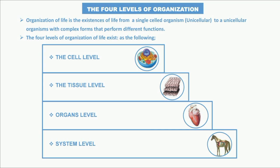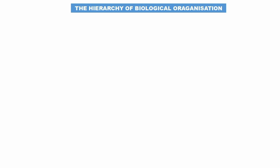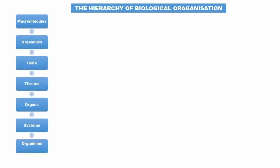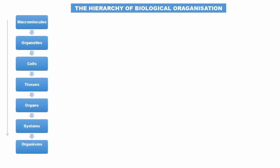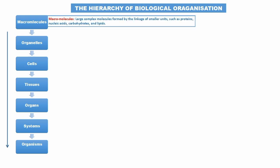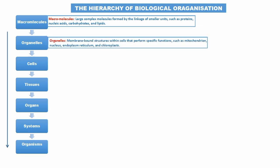Regarding the hierarchy of biological organizations: it starts with macromolecules — large complex molecules formed by linkage of small units such as proteins, nucleotides, carbohydrates, or lipids — and increases in complexity from there.